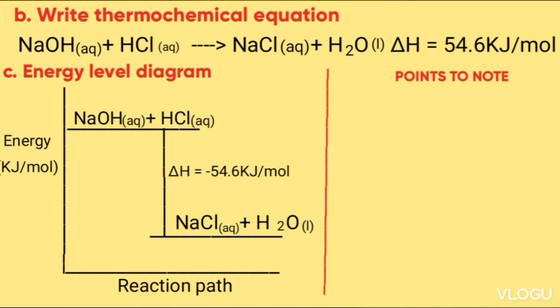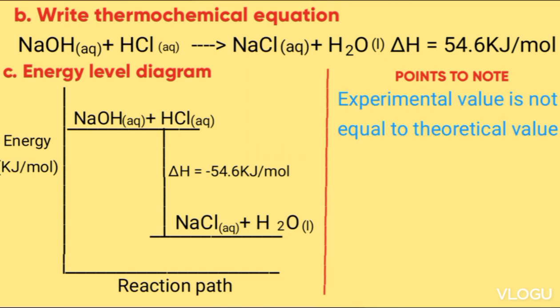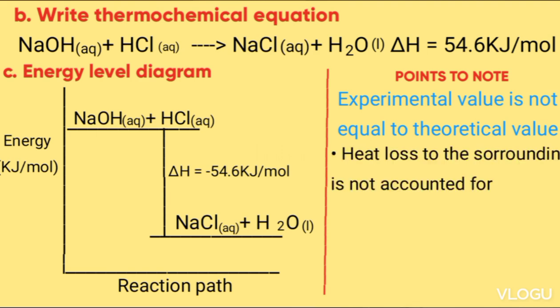Points to note: The experimental value is not equal to the theoretical value because heat loss to the surroundings is not accounted for. Note that the molar heat of neutralization of a strong base and a weak acid is 55.2 kJ/mol, whereas for a strong acid and a strong base it is 57.2 kJ/mol. The reason the value is lower for a weak acid is that some energy is used to ionize the weak acid before neutralization takes place.